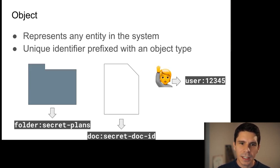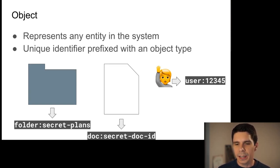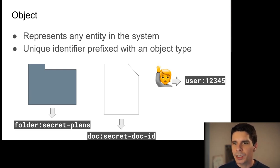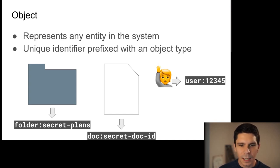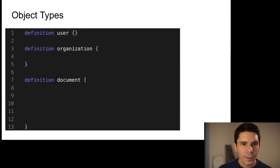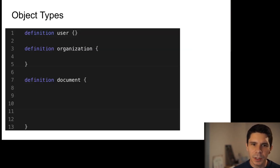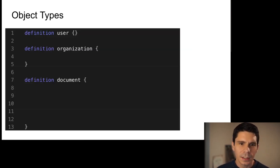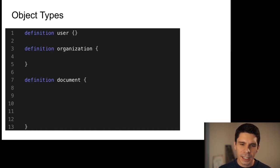Objects are any entity in the system — a unique identifier prefixed with an object type. Users, documents, groups, and videos can all be objects; you can think of each as a node in a graph. In our schema, you lay out different object types: this schema has users, organizations, and documents as the fundamental things we're trying to protect.